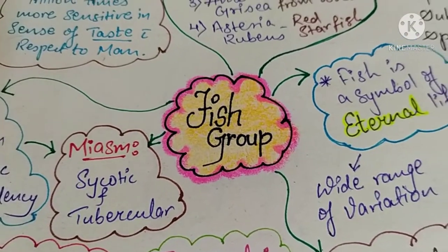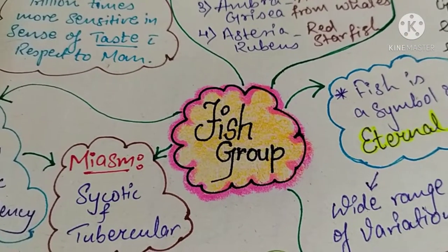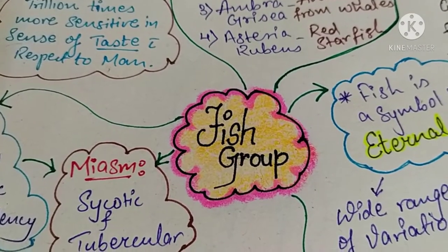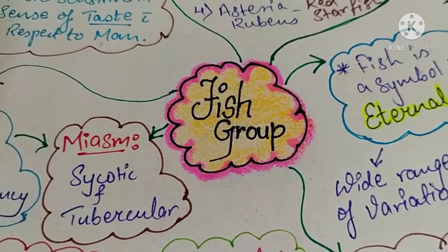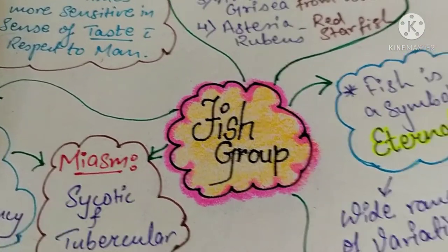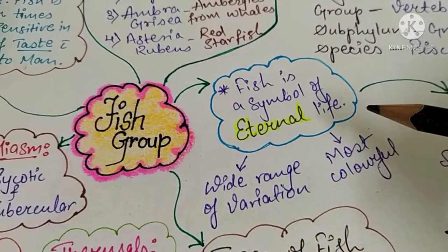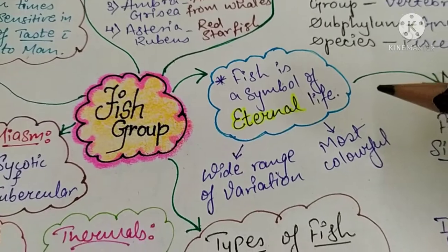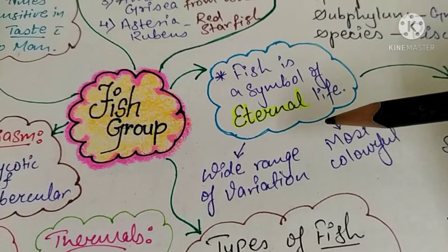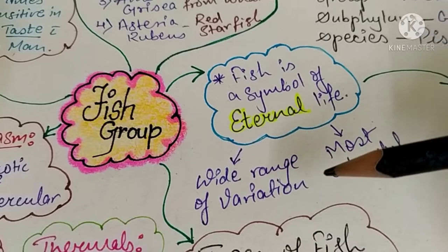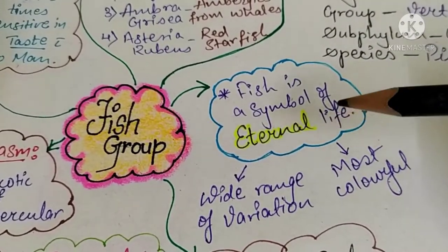As the name suggests, fish is a very different creature present on the earth — the most beautiful and different creature made till today. Fish is a symbol of eternal life. It is because it is very beautiful, colorful, and has a wide variety of ranges, so fish is called the eternal life symbol.